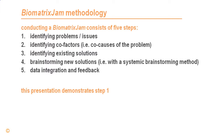Conducting a Biometrics GEM consists of five steps. First, we need to identify problems or issues. Then we need to identify their core factors or the core causes of the problem. Then we identify existing solutions and brainstorm new solutions guided by a systemic brainstorming method. And then there is data integration and feedback. This video demonstrates the first step of the Biometrics GEM methodology.